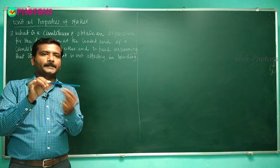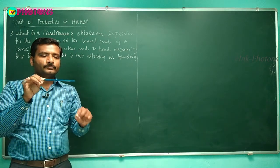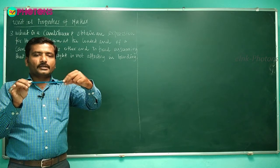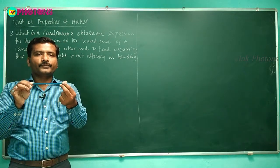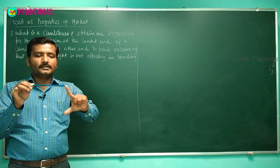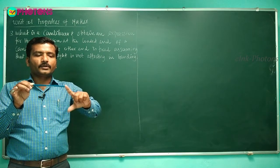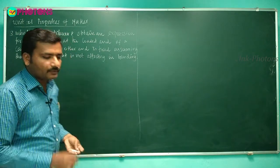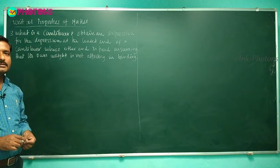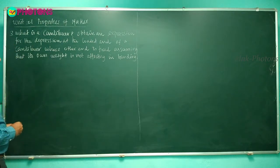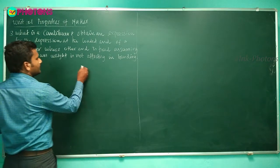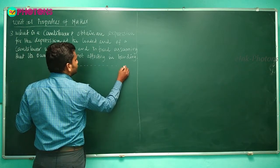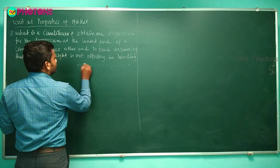Based on the amount of load, this vertical depression will vary — it will bend to a position and obtain equilibrium at one point. We have to ignore the weight of the cantilever and calculate this vertical depression for the applied load. So we need to derive the expression for this vertical depression.